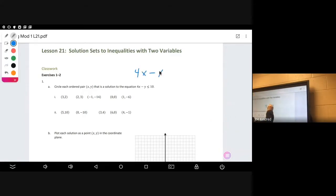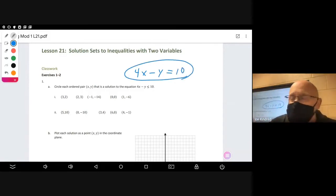In the last lesson, Lesson 20, it had this equals sign, and instead of 4x minus y less than or equal to 10, it had 4x minus y is equal to 10.